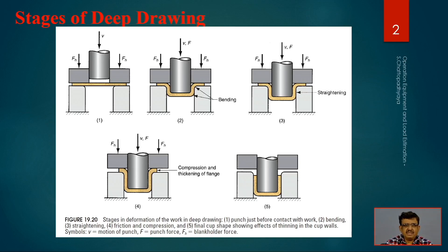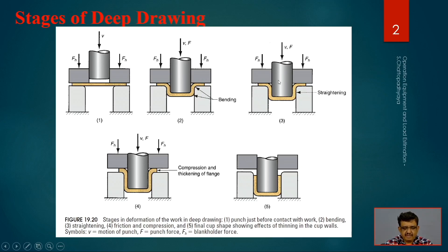The second stage: the punch has entered some part — an intermediate step — and bending has already started, as shown by the arrow. Stage 3 is straightening; this part is getting straightened as the punch progresses further. Stage 4 involves friction and compression, as whatever is extruded causes compression and thickening of the flange.